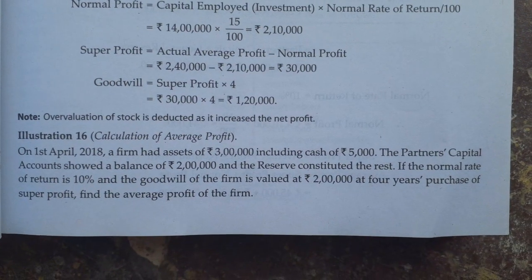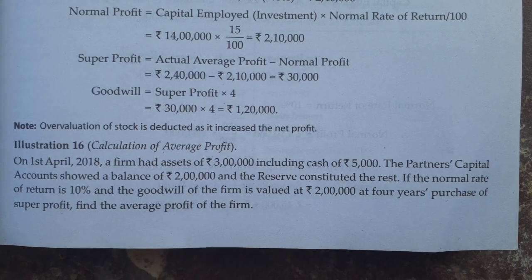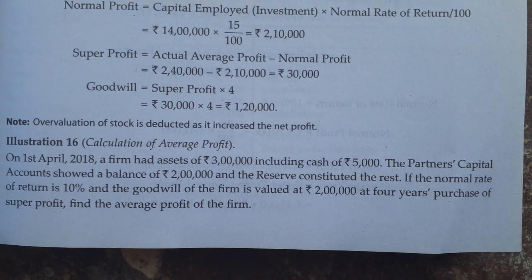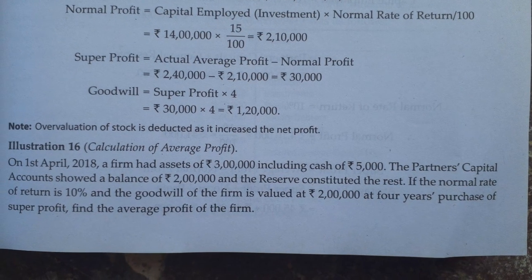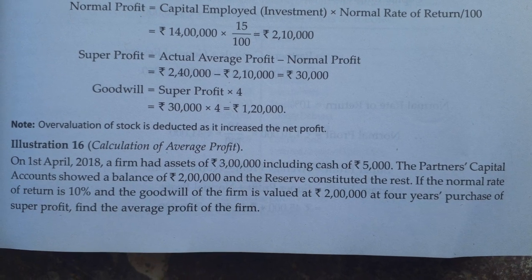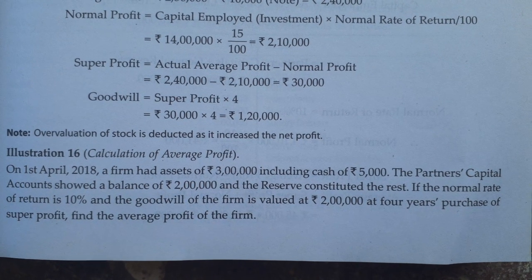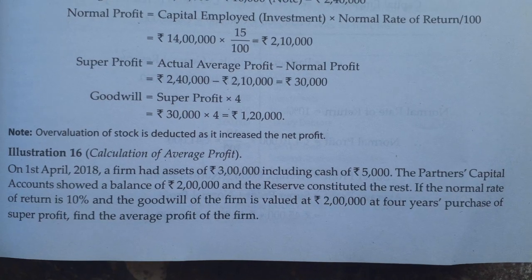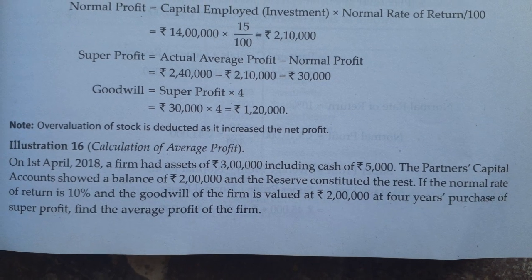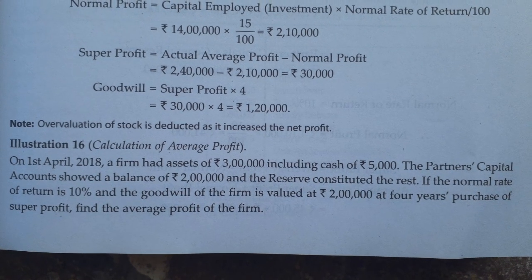Another question: from 1st April 2018, a firm had assets of 3,00,000, including cash of 5,000. The partners' capital account showed a balance of 2,00,000 and reserves constituted the rest. If the normal rate of return is 10% and the goodwill of the firm is valued at Rs. 2,00,000 at 4 years of purchase of super profit, we have to find the average profit.